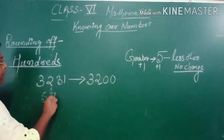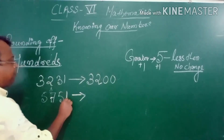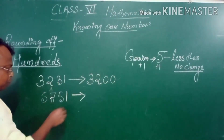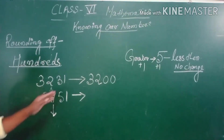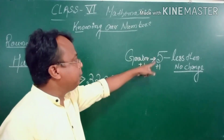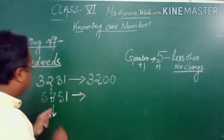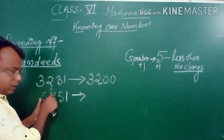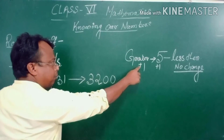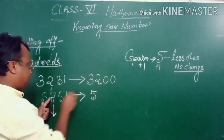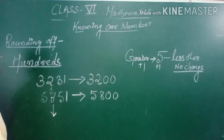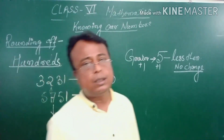Let us take one more example: 5751. We are rounding off to nearest 100. The hundreds digit is 7. Now see the next digit — it is 5. Is 5 less than, equal to, or greater than 5? If it is 5 or greater than 5, you add 1; if less than 5, no change. The next digit is 5, so we add 1: 7 plus 1 equals 8. The remaining digits become 0. So 5751 rounded to nearest hundred is 5800. Like this we can round off a number to nearest 10, nearest thousand, and nearest hundred.